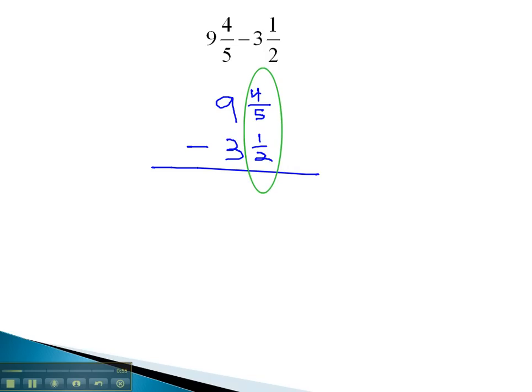In order to subtract the fractions, we need to find a common denominator. The common denominator of 5 and 2 is 10, so the denominator of 5 needs to be multiplied by 2 over 2, which gives us 8 tenths. The denominator of 2 needs to be multiplied by 5 over 5 to give us 5 tenths, and we're ready to subtract.